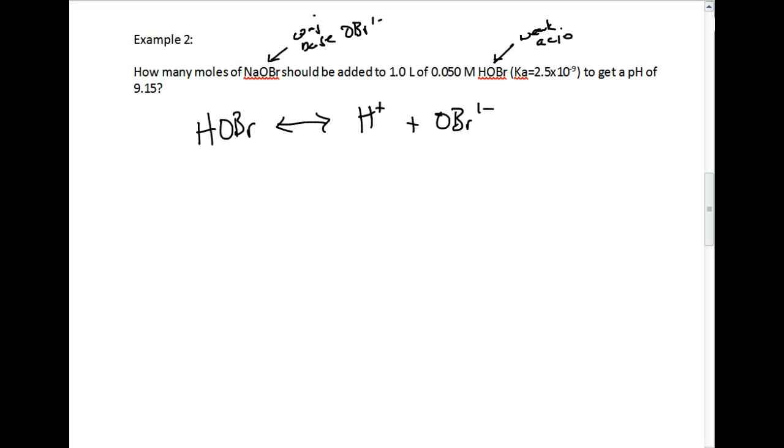I'm going to basically ICE table it again. It's telling us we're starting off with 0.050, and it also tells us we're looking for how many moles of sodium OBr we're going to need. What we're really after is that OBr concentration. We have a pH equal to 9.15.